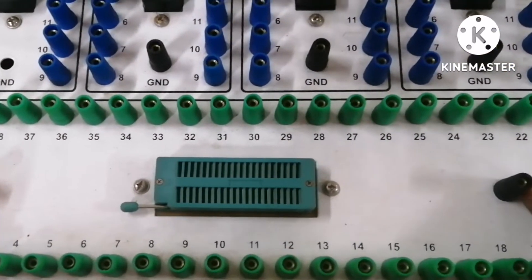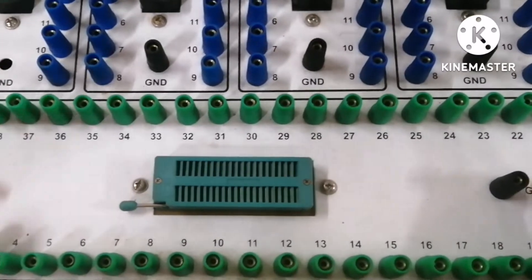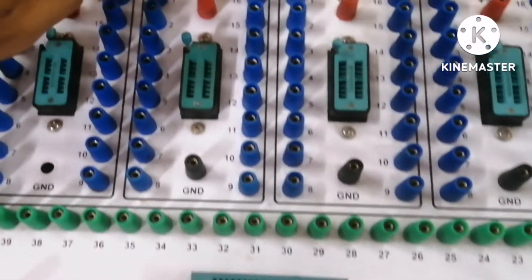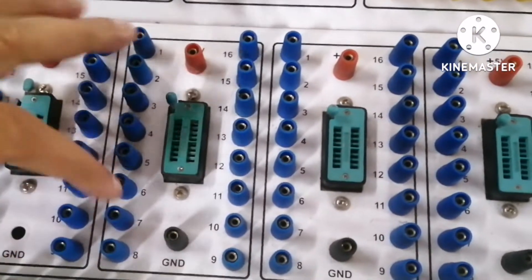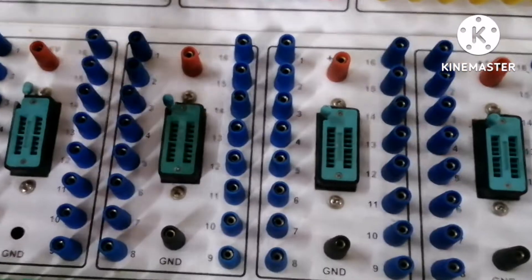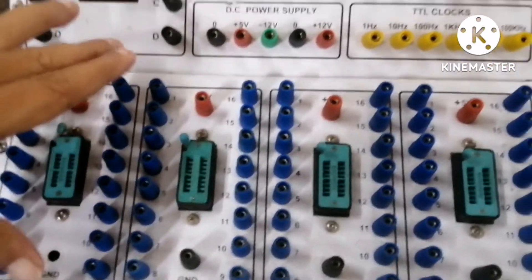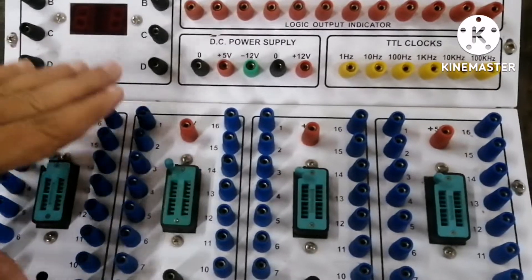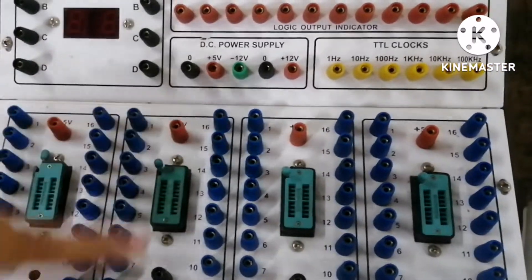Again we can see the VCC and ground for this also. So for each IC zig, VCC and ground pins are compulsory. To operate the IC in a proper manner, we should give the correct pins VCC and ground.